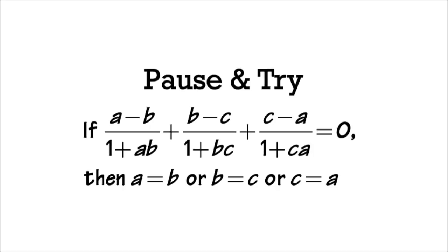Let's do another proof. Here's the statement: if this equation is equal to zero, then a equals b, or b equals c, or c equals a. In other words, at least two of a, b, c have to be equal. Of course, a, b, c are real numbers. It seems like we can just multiply everybody by the lowest common denominator, combine terms, and hope for the best. You should try to pause the video and try it first.